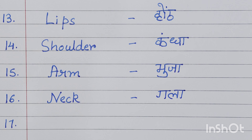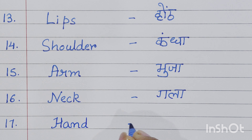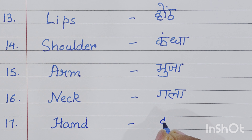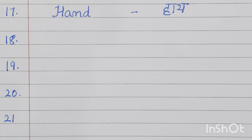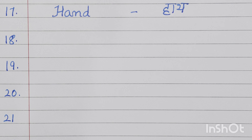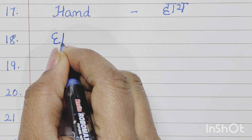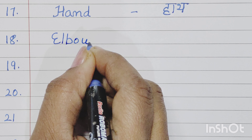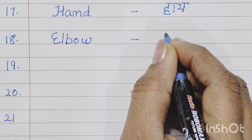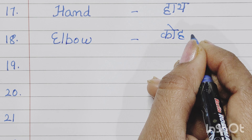Ninth is cheek, C-H-E-E-K, cheek means gaal. In plural we say cheeks. Tenth is ear, E-A-R, ear means kaan.